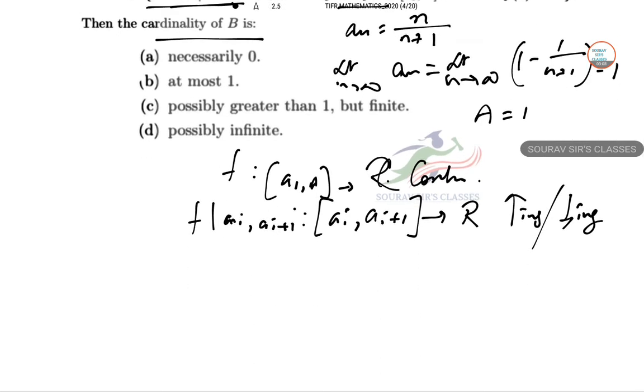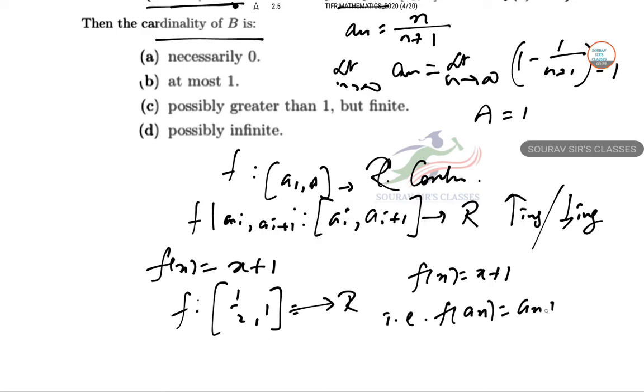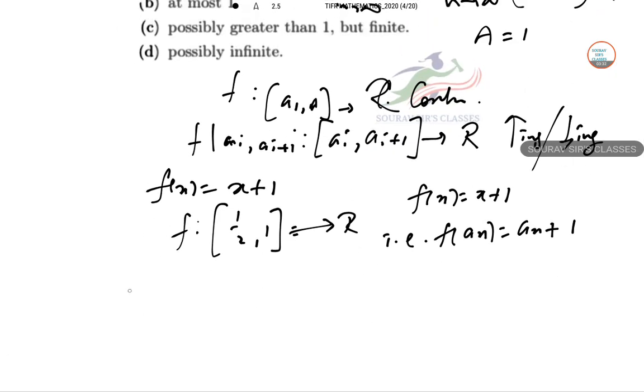So let us consider f x equal to x plus 1. So that is f of half to 1 will be giving you this R. So f x equal to x plus 1 which is strictly increasing. That is, f of a n we can take a n plus 1. So now if we take the positive integer i such as this is as large as possible.